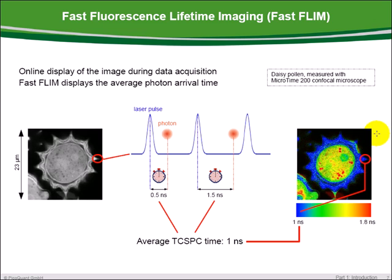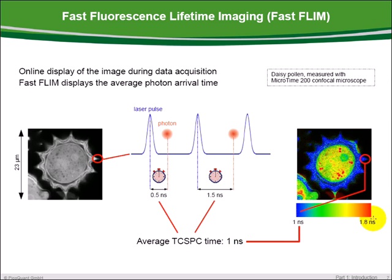Using the fast FLIM technique, the lifetime image is already displayed during data acquisition. For every pixel in the image, we calculate the start-stop times between the laser pulse and the arrival of the fluorescence photon — in this case 0.5 nanoseconds and 1.5 nanoseconds. The average lifetime, in this case 1 nanosecond, is displayed using a rainbow color scale from blue to red. This process is performed for each pixel, resulting in a FLIM image displaying the average lifetimes of the sample.